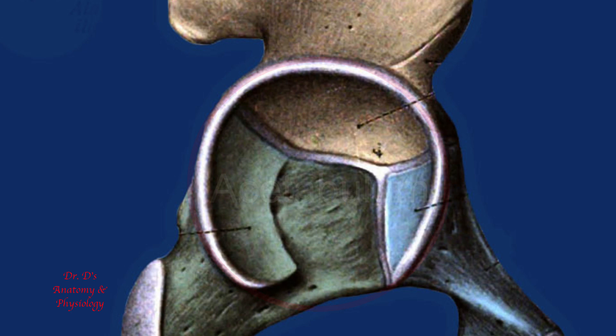The ilium contributes to two fifths of the articular surface, the pubis to one fifth, and the ischium to two fifths.